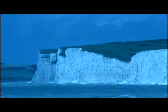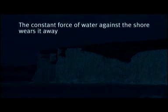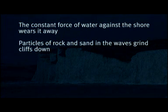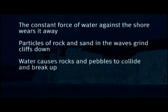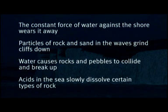Waves cause erosion in four main ways: when the constant force of water against the shore wears it away; when particles of rocks and sand in the waves grind cliffs down; when the action of water causes rocks and pebbles from the shore to smash into each other and break up; and when acids in the sea slowly dissolve certain types of rocks.